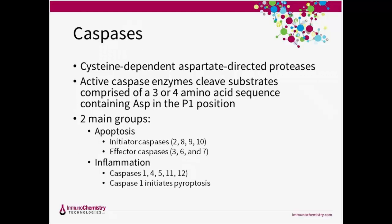One common thread to both apoptotic and pyroptotic cell death is the activity of caspases. Caspases are the enzymes underlying the whole cell death process. Caspases, or cysteine-dependent aspartate-directed proteases, are activated and then cleave substrates leading to the eventual disassembly of the cell. There are two different groups: those involved in apoptosis and those involved in inflammation. Initiator caspases regulate apoptosis upstream, while effector caspases are responsible for proteolytic cleavages that lead to cell disassembly. Inflammation is heavily dependent on caspase-1, which is associated with inflammasome activity and its conversion of pro-interleukin-1-beta into the active IL-1-beta cytokine.